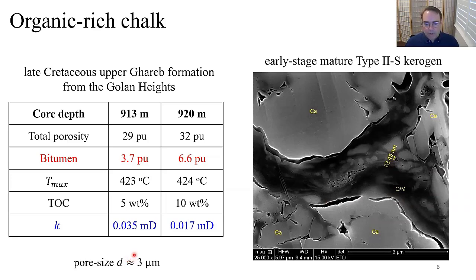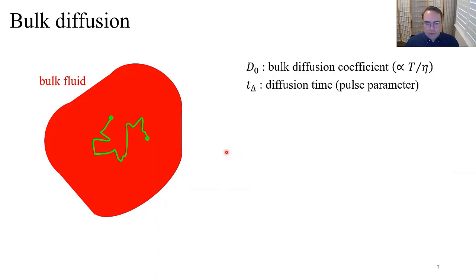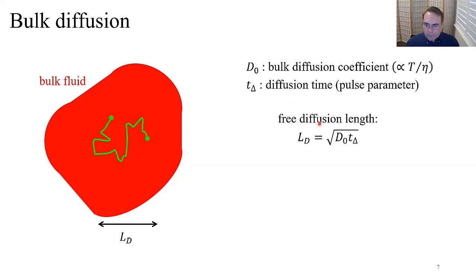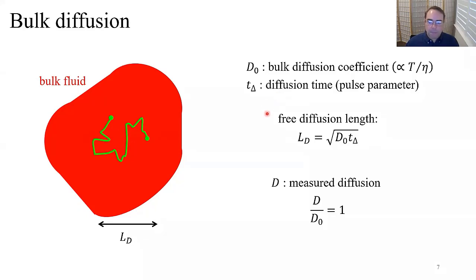Regarding bulk diffusion: here is an illustration of a bulk fluid with one tagged molecule undergoing random walk during molecular diffusion. D₀ is the bulk diffusion coefficient, proportional to temperature over viscosity. The diffusion evolution time T_Δ is a pulse parameter we choose. The free diffusion length L_d, given by the square root of D₀ times T_Δ, is the spatial extent of the random walk. For a bulk fluid, the measured diffusion equals the bulk diffusion coefficient.